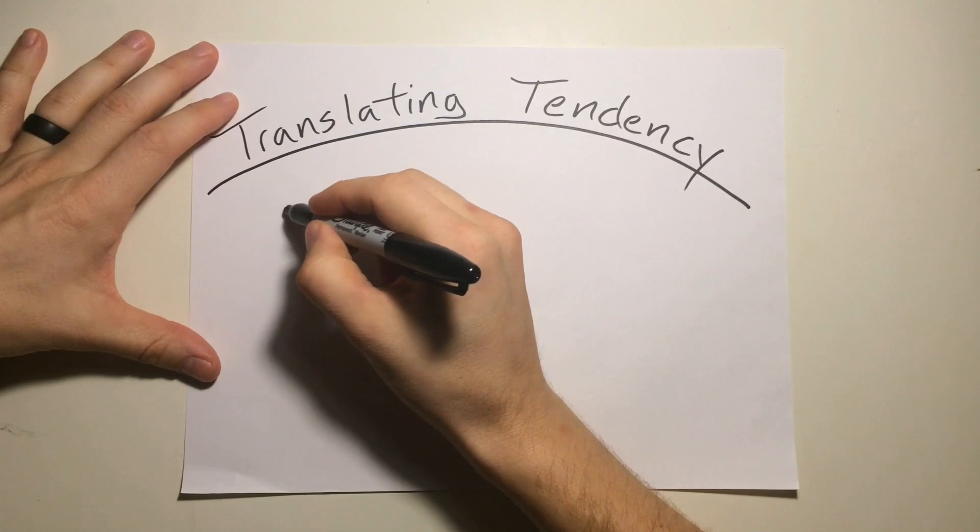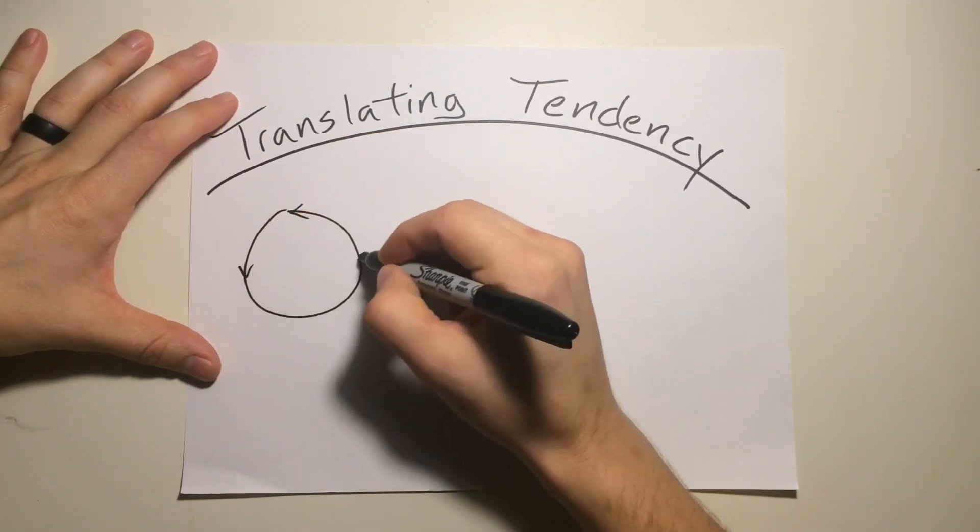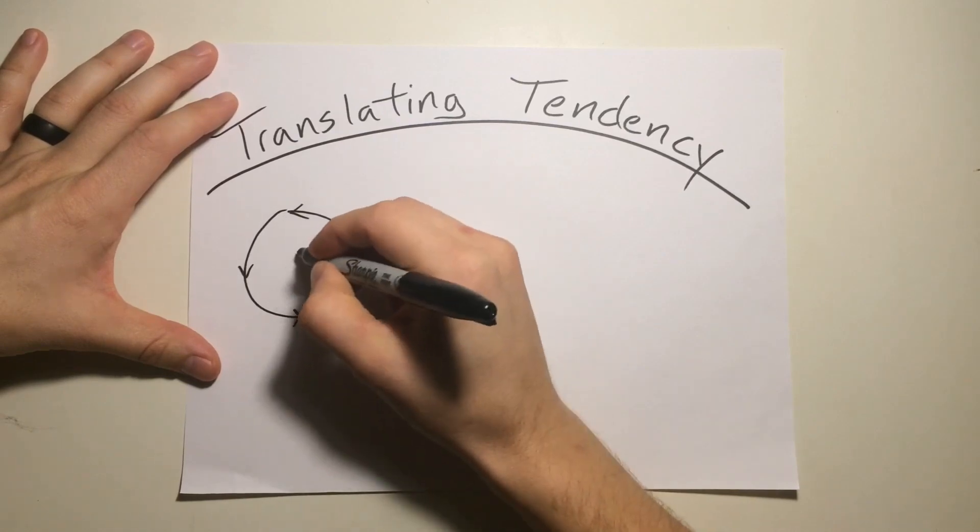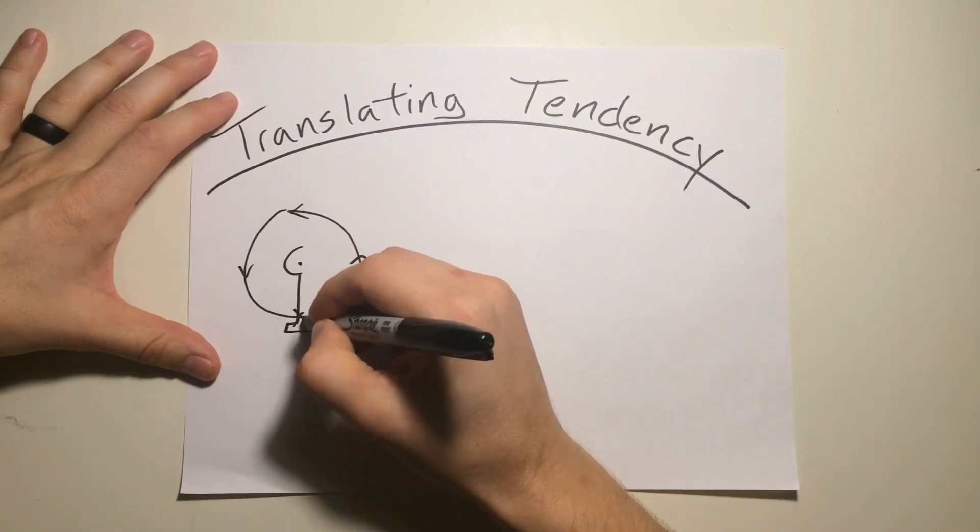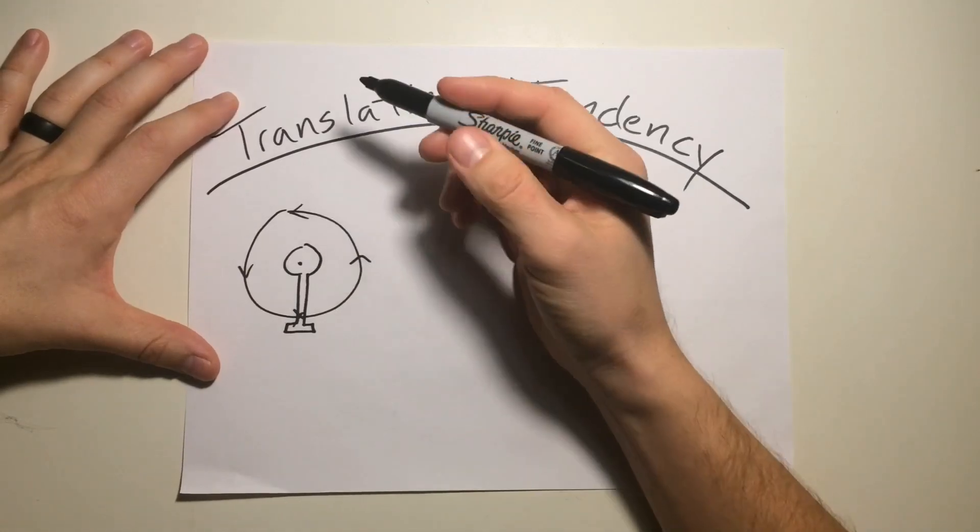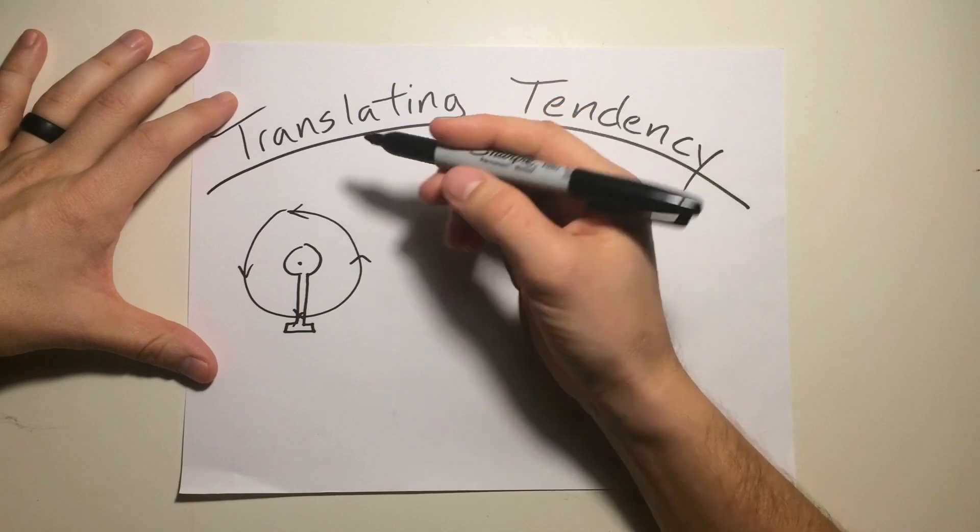So what is Translating Tendency? Well, let's take our helicopter system. Just like before, we'll be using a counter-clockwise rotating helicopter system. Now, Translating Tendency is the tendency for the helicopter to drift in the direction of tail rotor thrust.